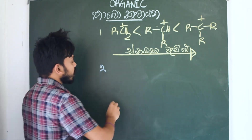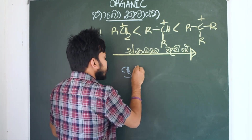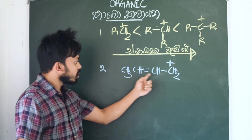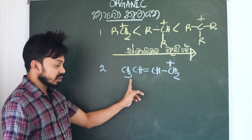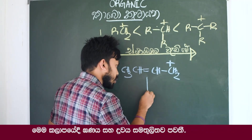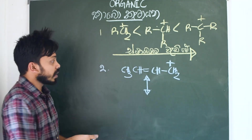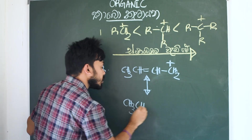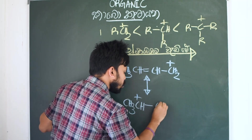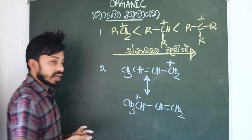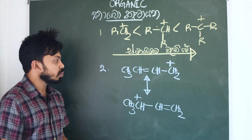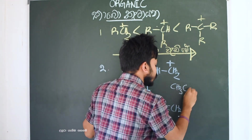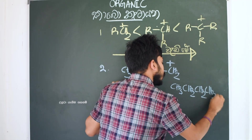Let's take this one: CH3 CH double bond CH CH2 plus. Let's take a look at the next example — CH3 CH double bond CH2. This is the case of CH3 CH2 CH2 CH2 CH2 plus.